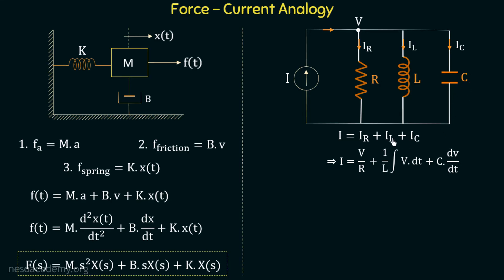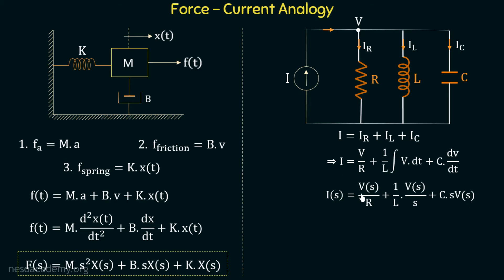Applying the Laplace transform to this equation, we get I(s) = V(s)/R + (1/L)·(V(s)/s) + C·s·V(s), where I(s) is the Laplace transform of I, V(s) is the Laplace transform of V, V(s)/s is the Laplace transform of ∫V dt, and s·V(s) is the Laplace transform of dV/dt.